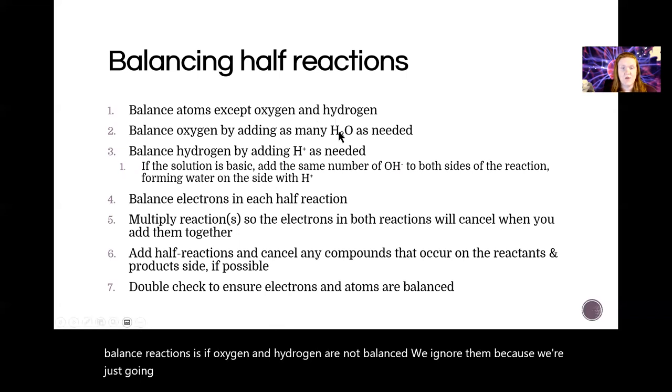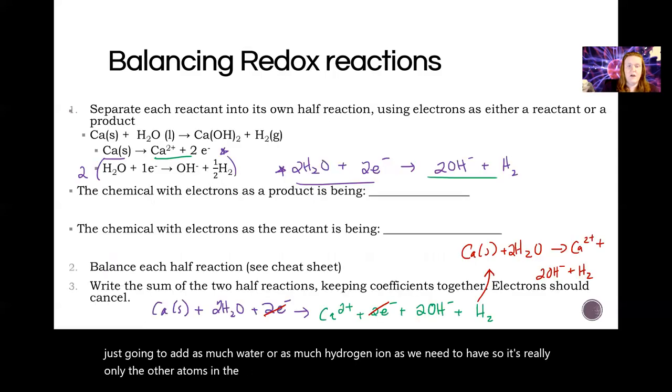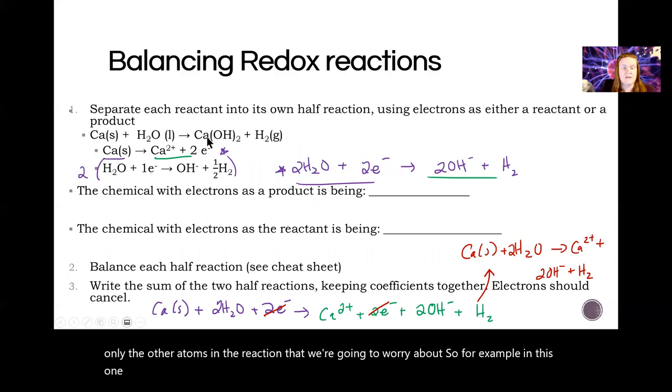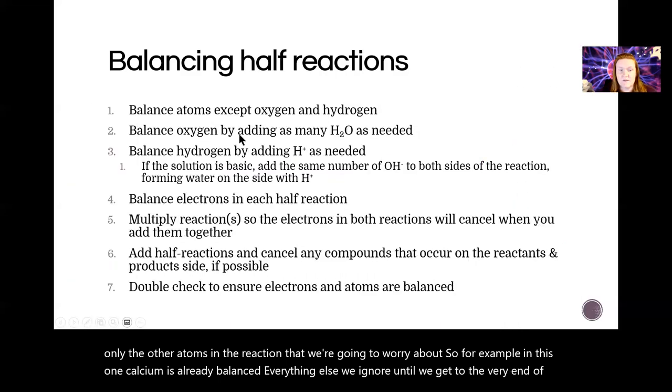One thing that's different from what we did in chapter four when we first learned to balance reactions is if oxygen and hydrogen are not balanced, we ignore them because we're just gonna add as much water or hydrogen ion as we need. It's really only the other atoms in the reaction that we're gonna worry about.